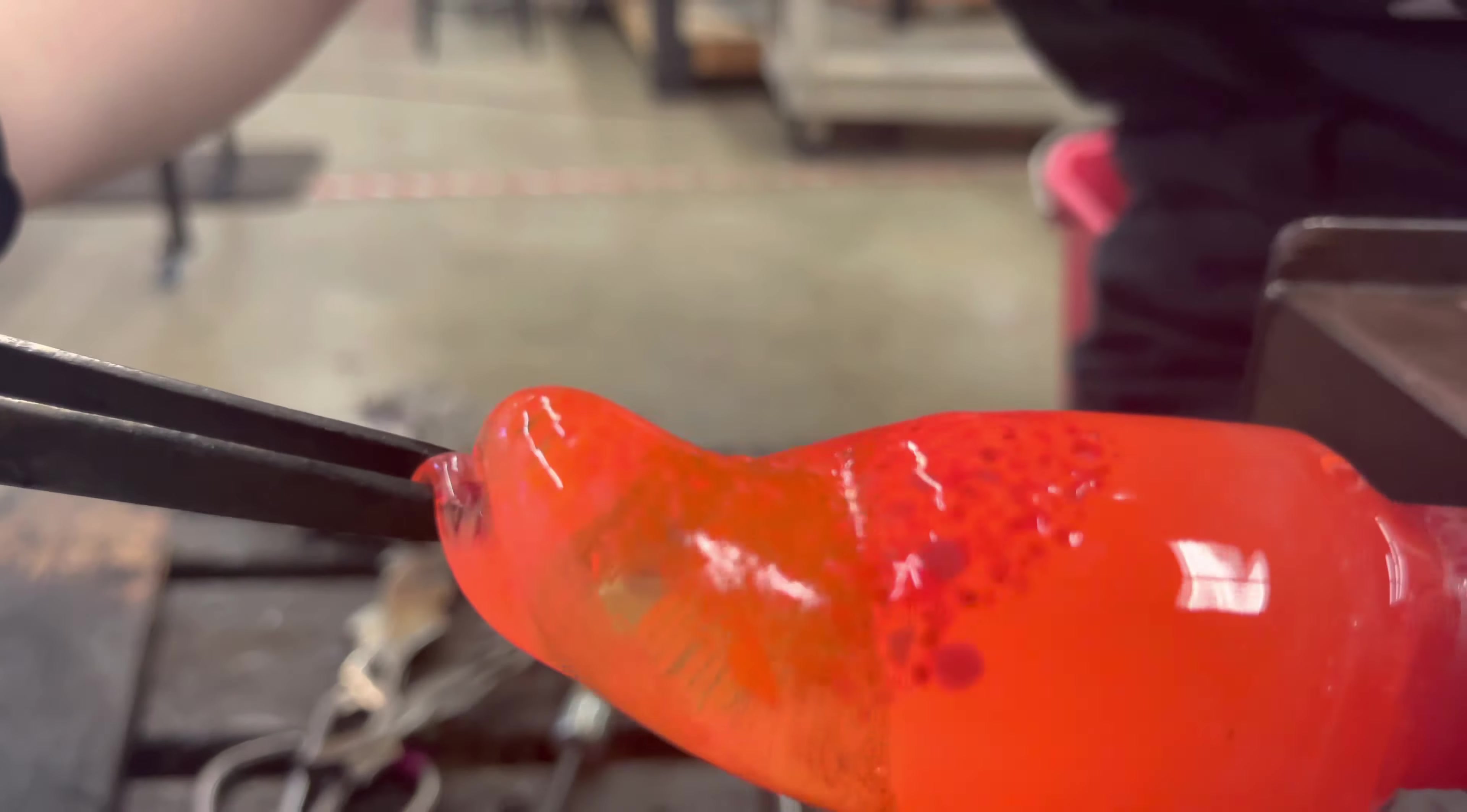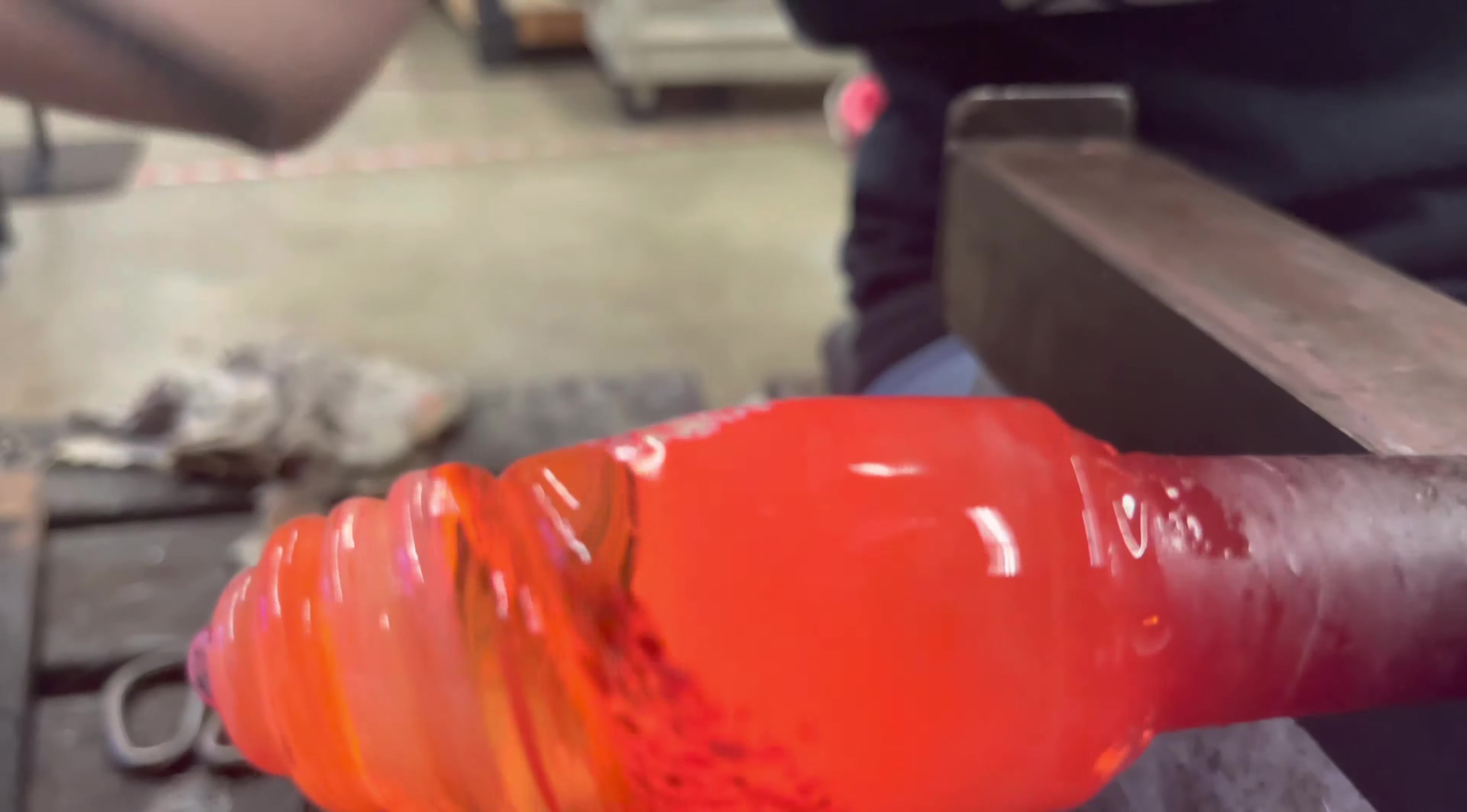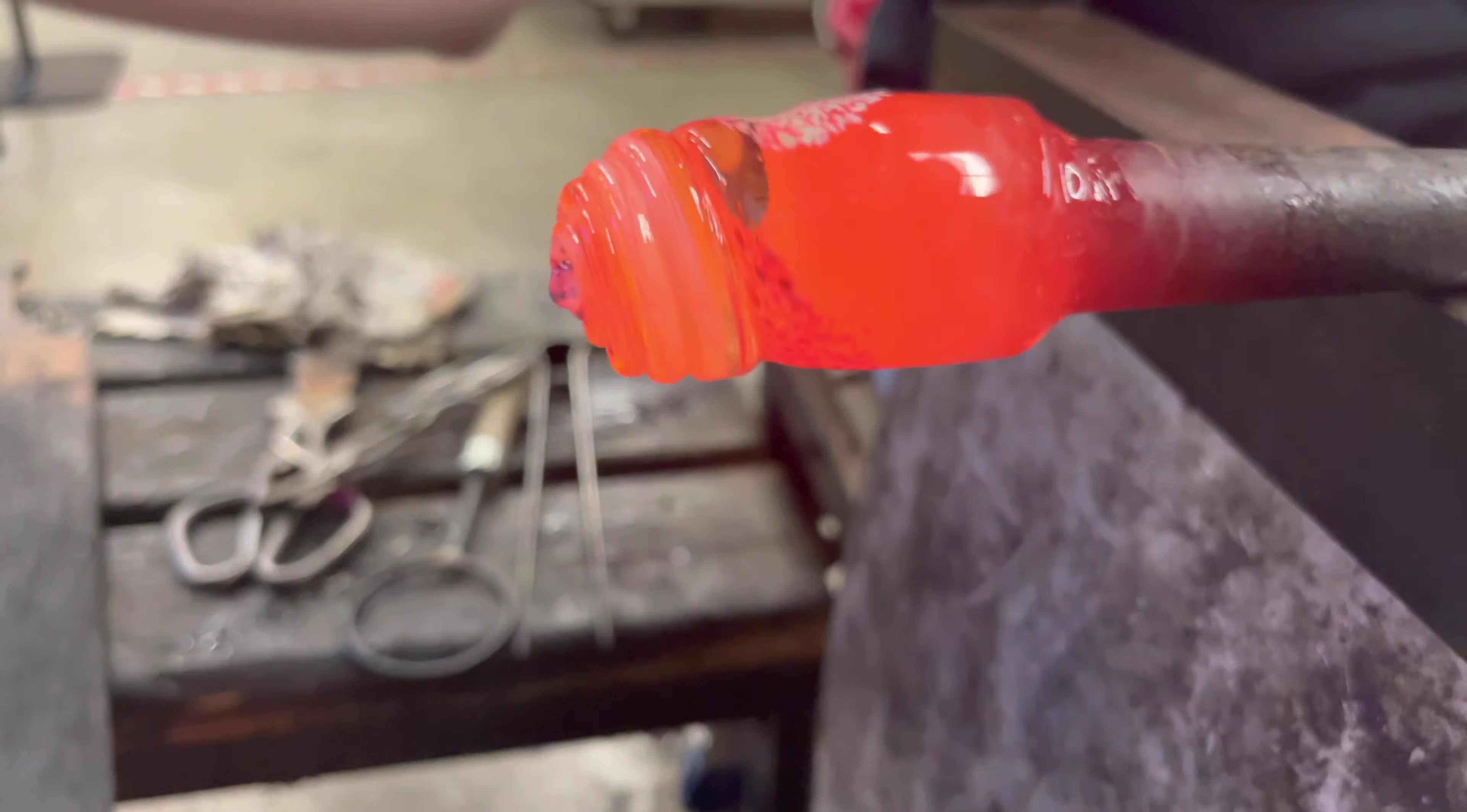By holding the tip and turning away from us, we can cause the surface to buckle and twist. With the color and pattern complete, we can use a handful of different tools like our jacks and our blocks to make the surface even and symmetrical.